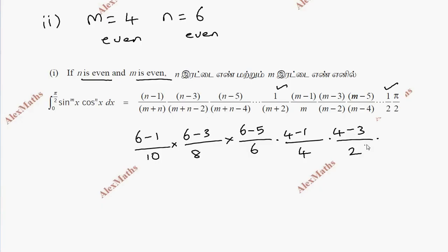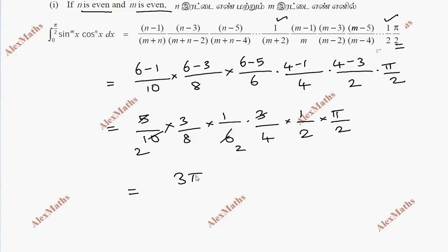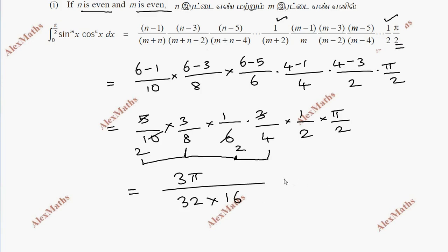Negative 1 by 2. Applying the formula, the answer works out: the numerator is 3π and the denominator is 16 into 32 into 16, giving a total of 512. So the final answer is 35π divided by 512.